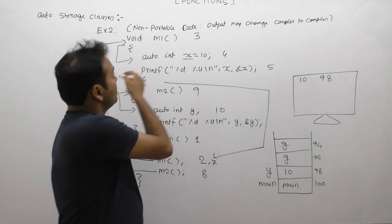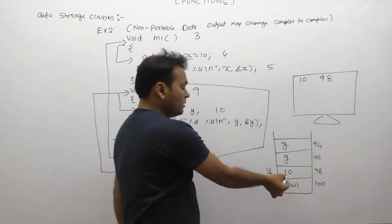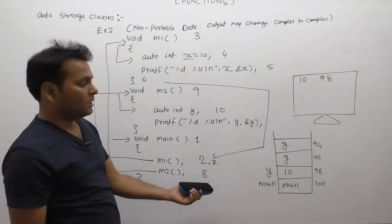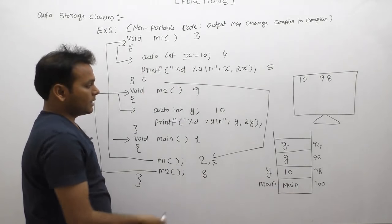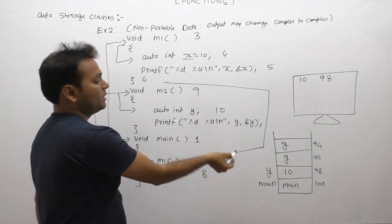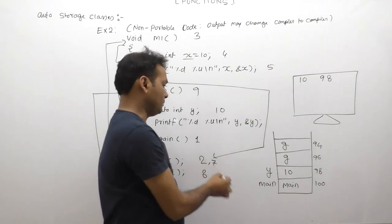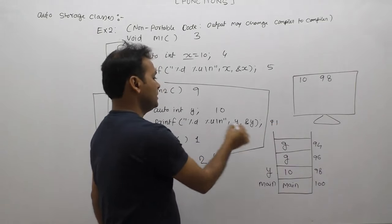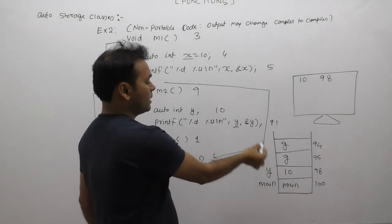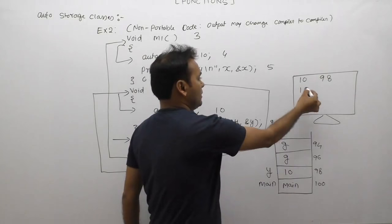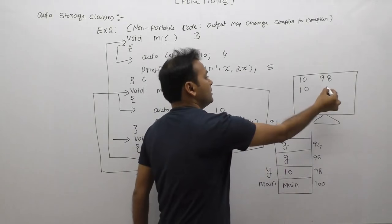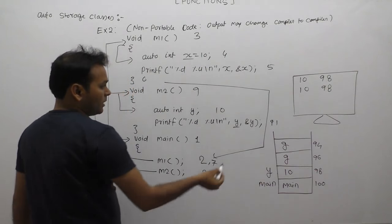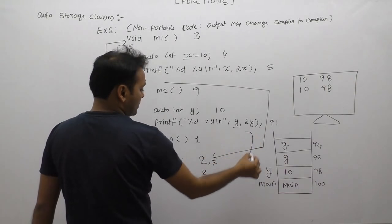But according to m1 function, previously x had value 10. That same location which was previously there still exists, and in same place y's value by default comes, then 10 according to next statement. Print statement displays value of y as 10, address of y is also 98. This is the expected output of this program. Again control returns to its calling place.